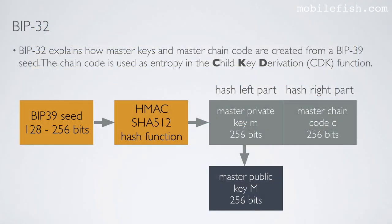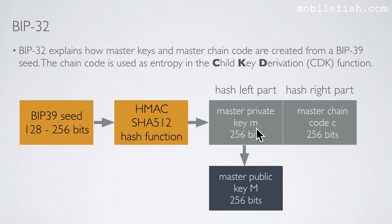BIP32 explains how master keys and master chain code are created from a BIP39 seed. The chain code is used as entropy in the child key derivation function. You start with the BIP39 seed. The HMAC SHA-512 hash function uses this seed and generates a hash. The left part of the hash is the master private key and the right part is the master chain code indicated with the letter C. The master private key can be used to generate the master public key indicated with the capital letter M.